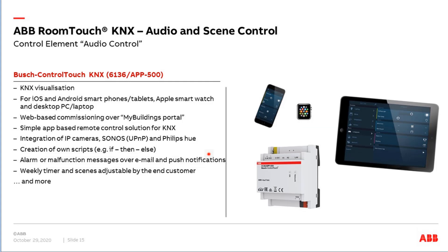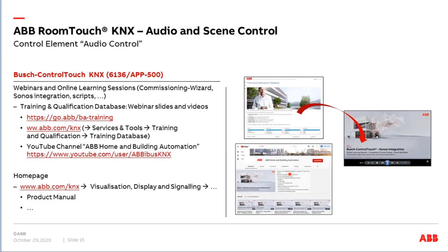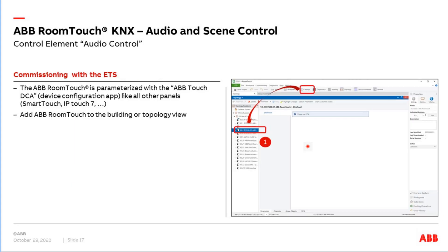Today we put the focus on the ABB Bush Control Touch. It's a kind of KNX visualization — a hardware DIN rail component. Via smartphone, Apple Watch, or tablet you can operate the complete KNX installation. Commissioning is done via the My Building Portal. Additionally it has a built-in gateway to Sonos, Philips Hue, and more. More information is on our website and training database, including complete webinars and online recordings on Sonos integration.